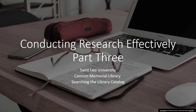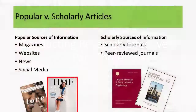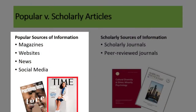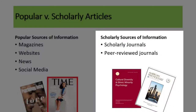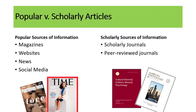First, let me explain what scholarly sources of information are and why you need them. Popular sources of information are found in magazines, newspapers, websites, and social media. Scholarly sources of information are found in journals. Sometimes your professor will tell you that you must use peer-reviewed articles, meaning the article is scholarly and has gone through a rigorous review process by experts on the topic. These resources are considered more reliable and credible than popular sources of information.